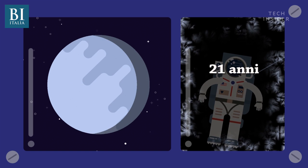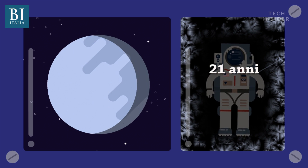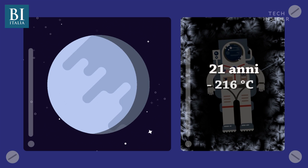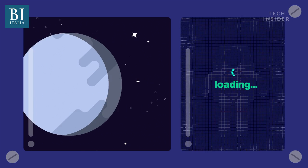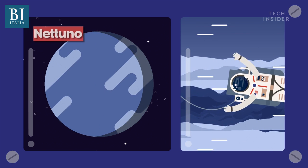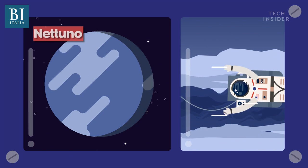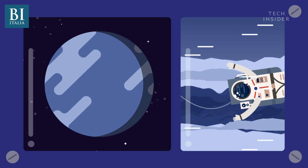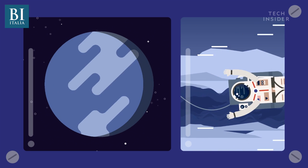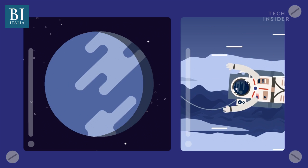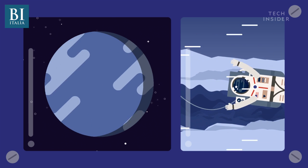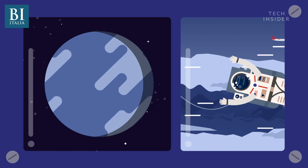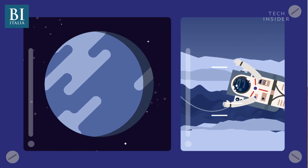Last but not least is Neptune. You'll want to pack a windbreaker for this visit. Nicknamed the windiest planet, Neptune's strongest winds can exceed 1,930 kilometers per hour. That's one and a half times the speed of sound on Earth, and fast enough to fly from New York to Los Angeles in just 2.3 hours.